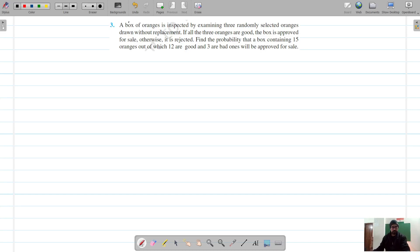Our next question is question number third of exercise 13.2. A box of oranges has to be examined for good or bad ones, whether it's good for sale or not. That is done by checking three randomly selected oranges. If all the oranges are good, the box is approved for sale; otherwise, it is rejected.